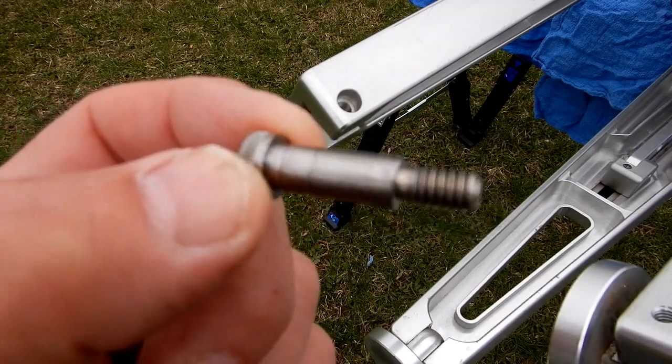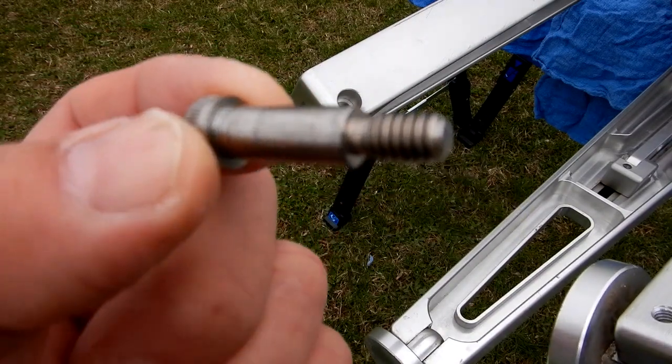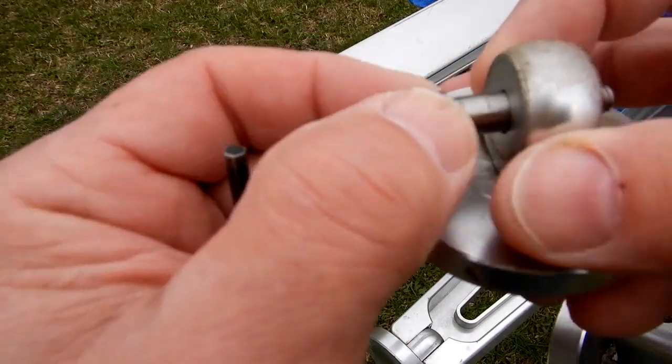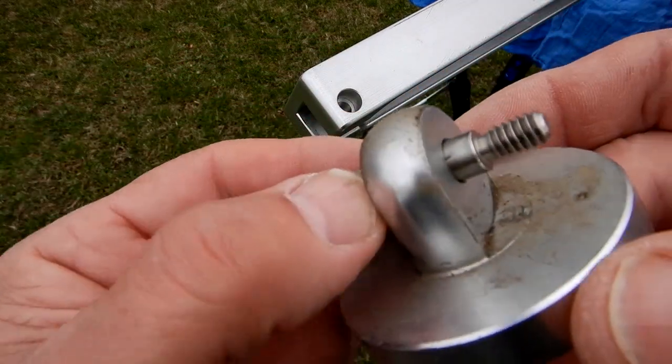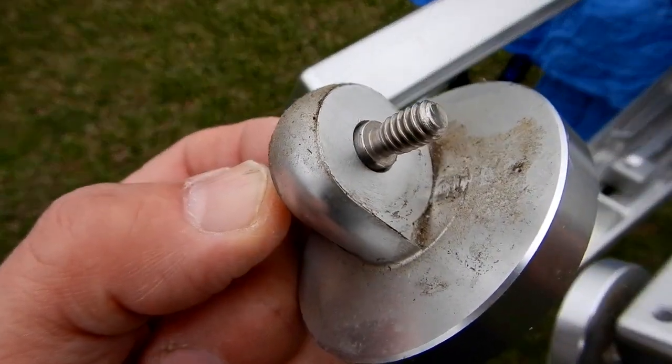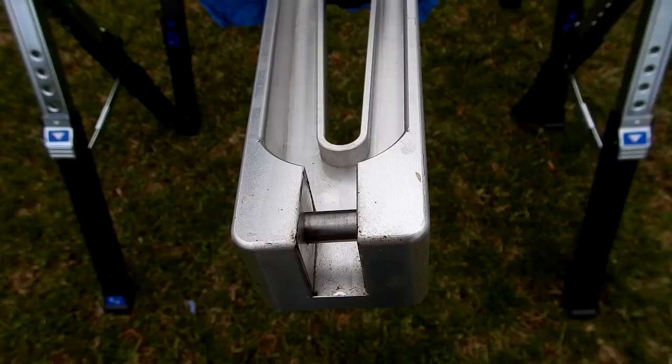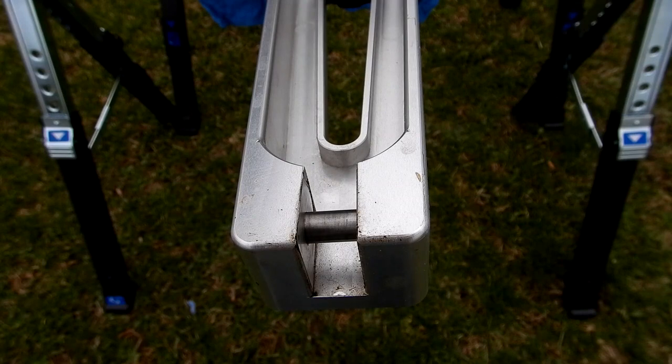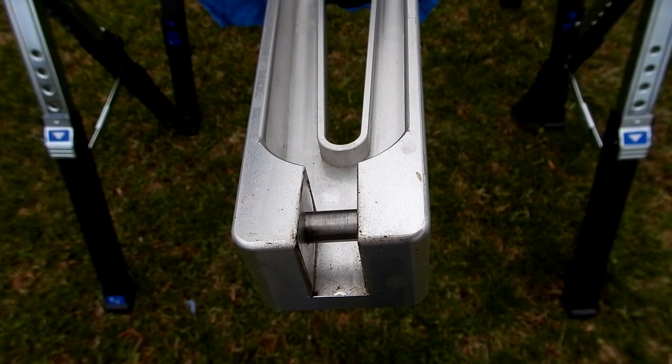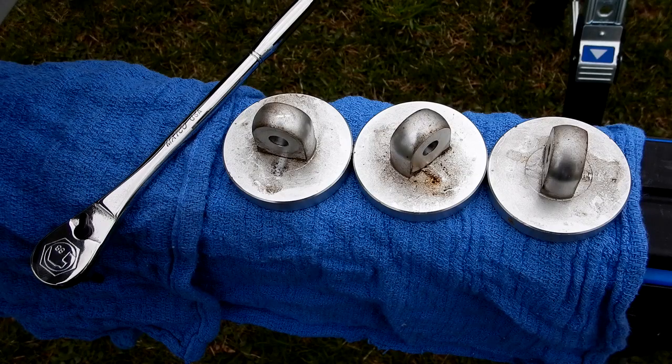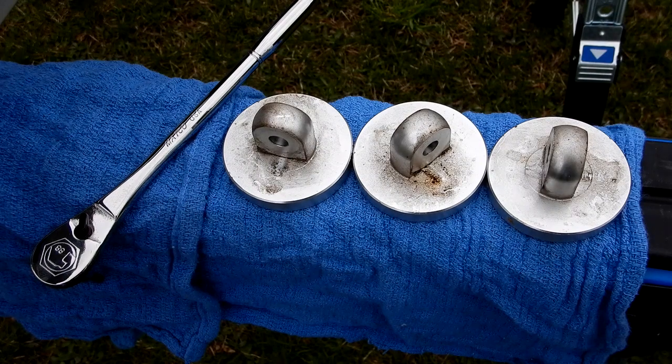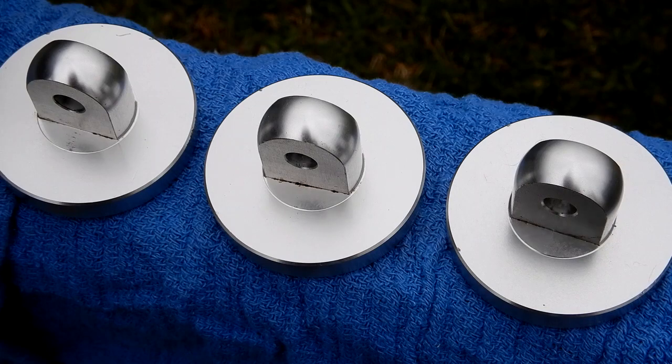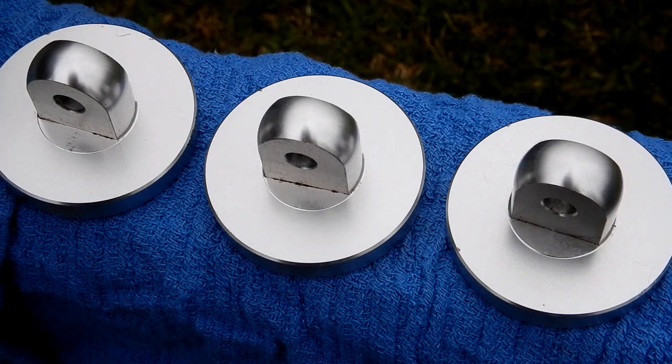That's a shoulder bolt that goes through there, which allows for a nice smooth operation. You can see that shoulder bolt through the leg. Now that they're off, it'd be a good time to clean those up. Okay, those look much better and I just used a furniture polish to clean them.